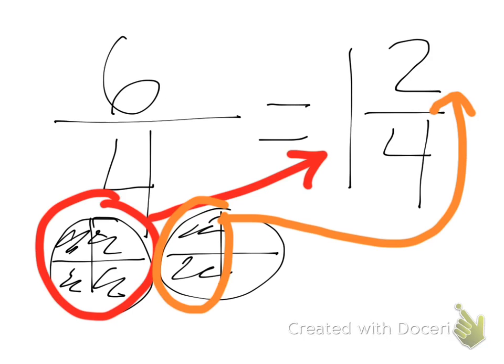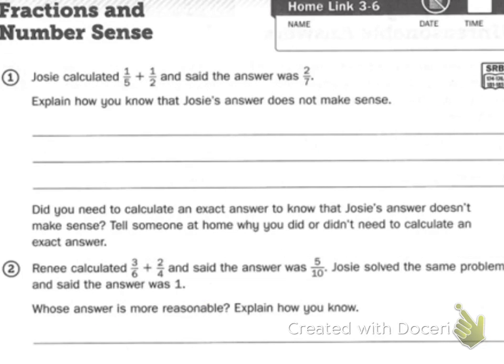Let's take a look at your homework. We also know that when we add fractions together, they need to have the same denominator. You can't just add things together. So it says, Josie calculated 1 fifth plus 1 half and said the answer was 2 fifth. Explain, keyword there, explain how you know that Josie's answer does not make sense. Your other keywords there.